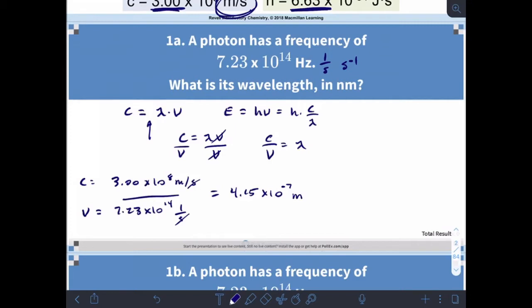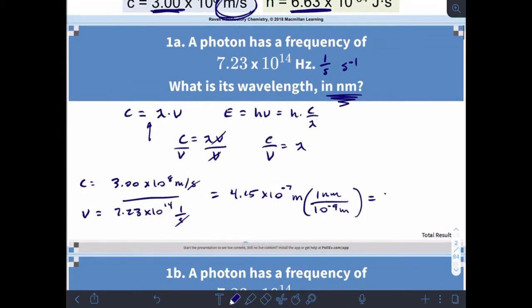In wavelengths we usually put things in terms of nanometers, which is what you're asked for. One nanometer is 10 to the minus 9 meters, so this is 415 nanometers.